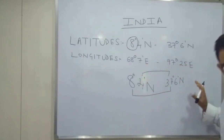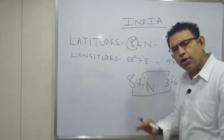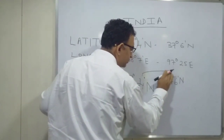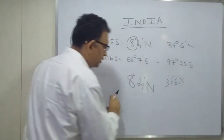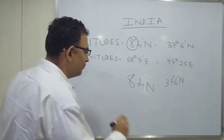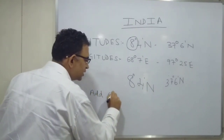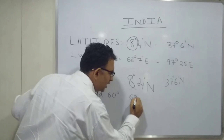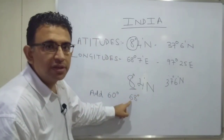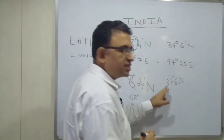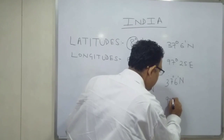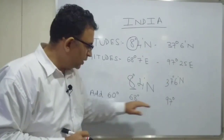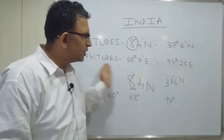How do I remember the longitudes? Very simple. For the degrees part, there is a standard formula: add 60 degrees to the latitude degree. So for the first measure — 8 degrees — I add 60 and I get 68 degrees. Does it match? Yes, it matches. Similarly, my second latitude degree is 37, I add 60 and I get 97 degrees. Does it match? Yes, it matches. We've got the longitude degrees.